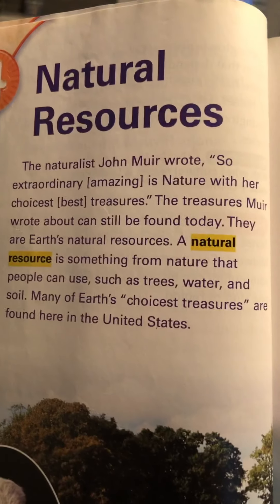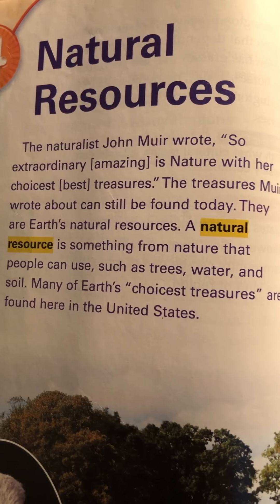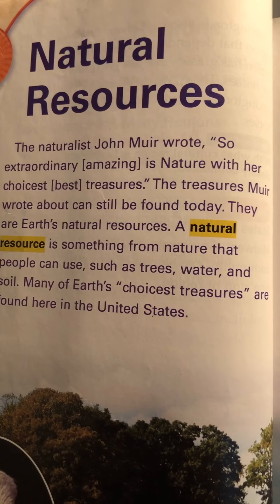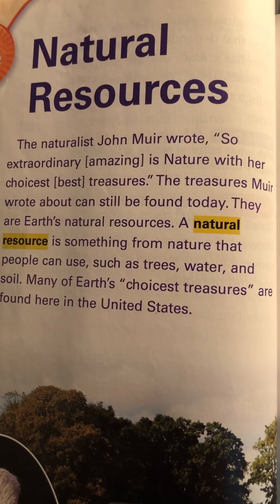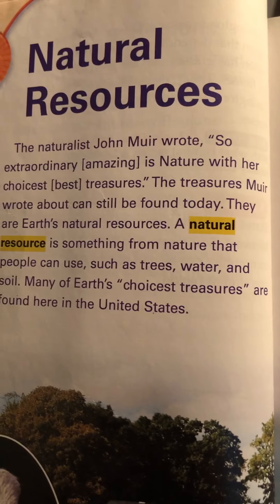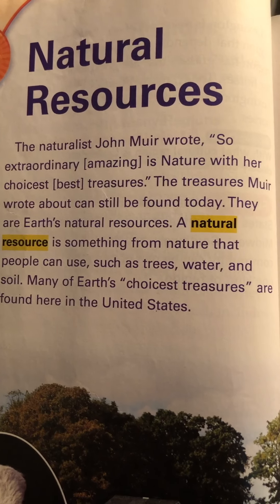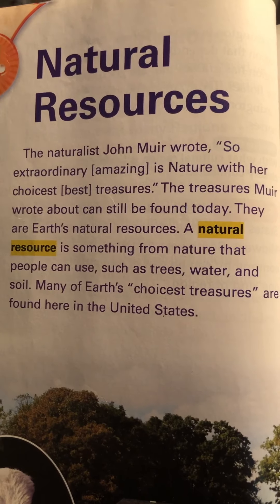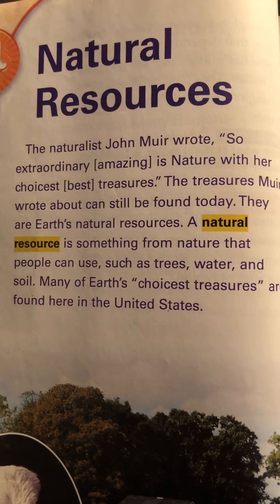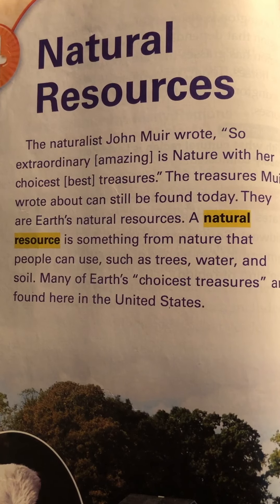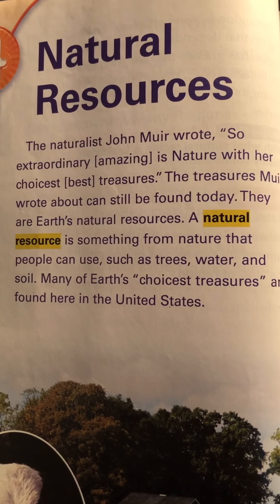The naturalist John Muir wrote, 'So extraordinary amazing is nature with her choicest best treasures.' Treasures Muir wrote about can still be found today. They are Earth's natural resources. A natural resource is something from nature that people can use, such as trees, water, and soil.